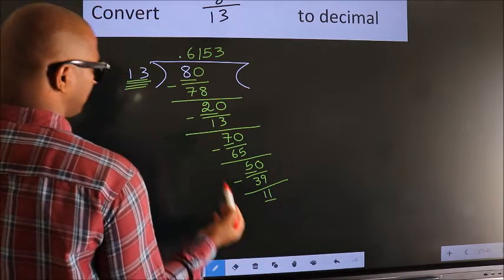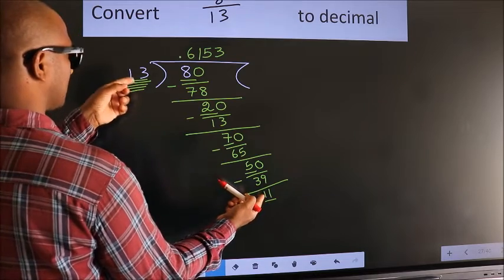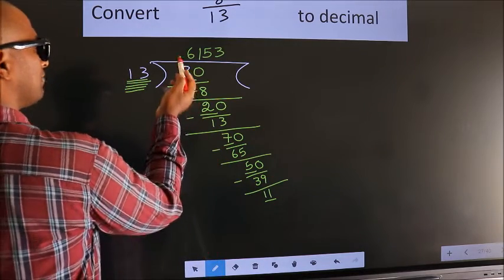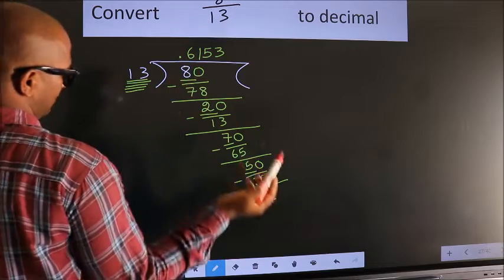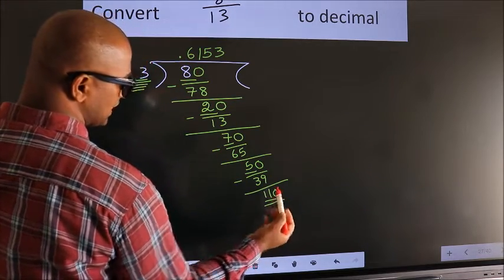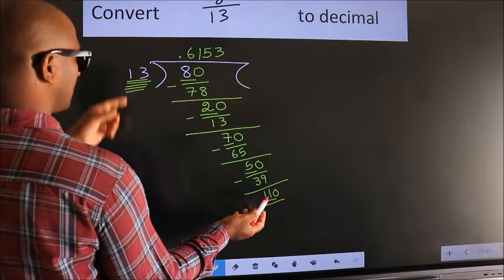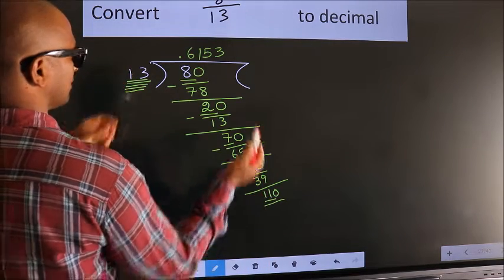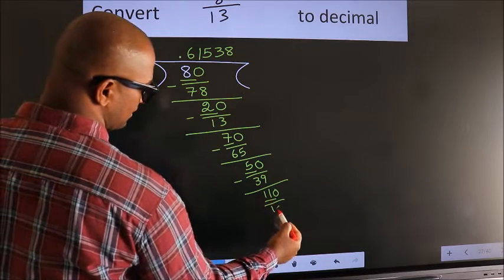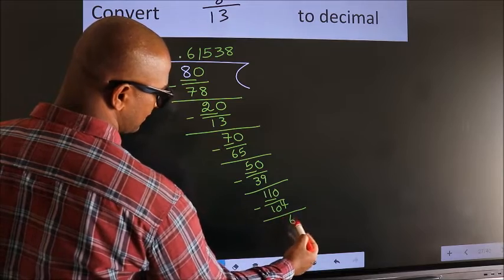Here we have 11, here 13. 11 is smaller than 13. And we already have the decimal, so we can directly take 0. So, 110. A number close to 110 in the 13 table is 13 eights, which is 104. Now, we subtract. We get 6.